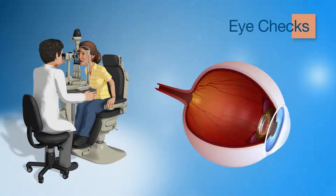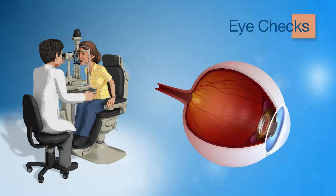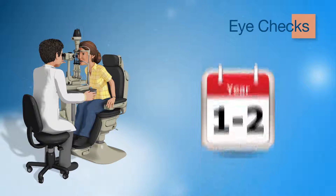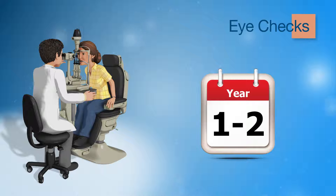An optometrist or eye specialist called an ophthalmologist can check the blood vessels at the back of the eye to detect any small blood vessel damage. This exam will involve either retinal photography or a dilated eye exam, and it is recommended that you have this eye exam every 1 to 2 years or as advised.